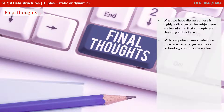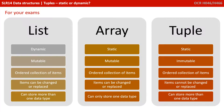What we've discussed here is highly indicative of the subject you are learning, in that the concepts are changing all the time. With computer science, what was once true can change rapidly as technology continues to evolve. For a nice summary and absolute clarity, we've provided here on screen a summary of a list, array, and tuple, and the facts that you should learn for your examination.